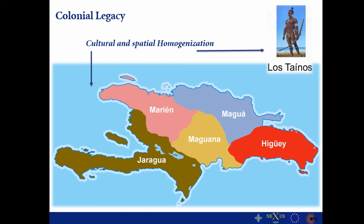One of the colonial legacies of these historical processes of territorial and cultural creation is that the indigenous populations were homogenized to a single group, which were called the Taínos, and then the territorial separation on the island was left to these five caciques.